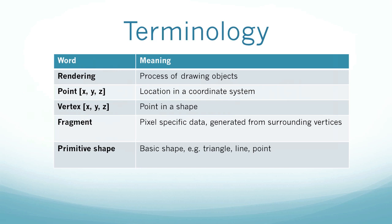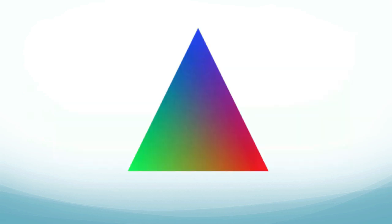But I'm not going to confuse you anymore. Let's head right to the fragments. So fragments, what is that? A fragment is pixel specific data generated from surrounding vertices. What that means is, let's say you have a triangle with three vertices. Each of them has a different color. You have green right here, red in the bottom right and blue on top. Then the fragment is one of these pixels.